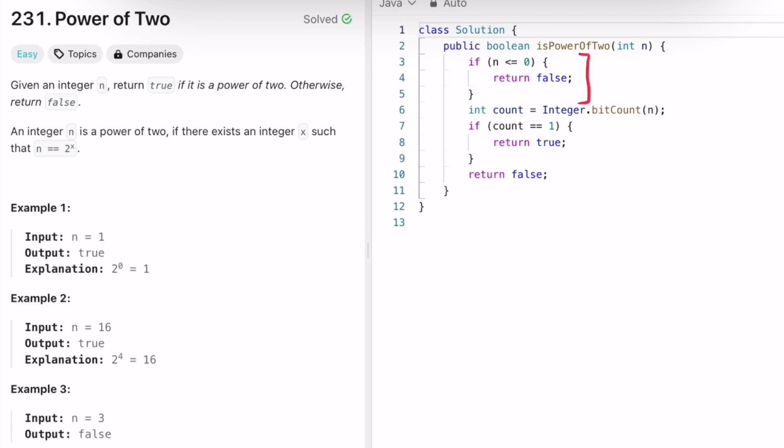Here as you can see, first we are checking if it is a zero or negative number. If that is the case, return false. Now I'm using Integer.bitCount and giving the input n.